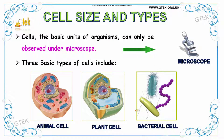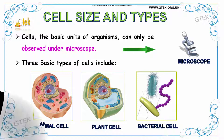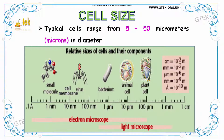Let us see about cell size and types. The cell is the basic unit of an organism and it can only be observed under a microscope. The three types of cells are animal cells, plant cells, and bacterial cells. Typical cells range from 5 to 50 micrometers in diameter.